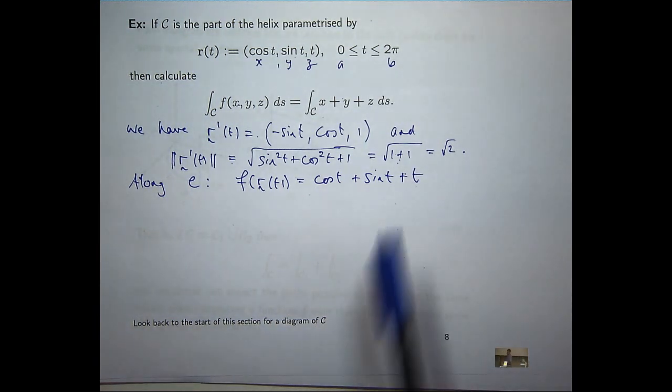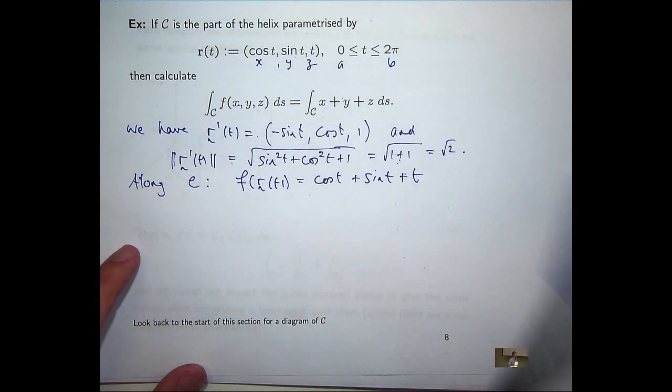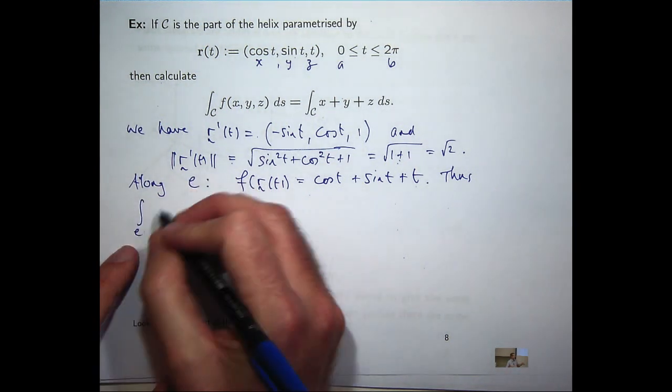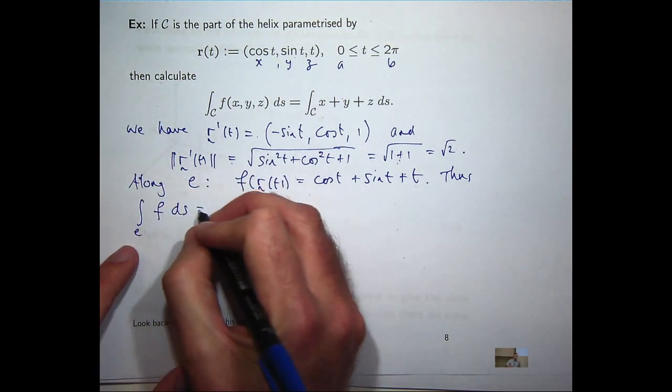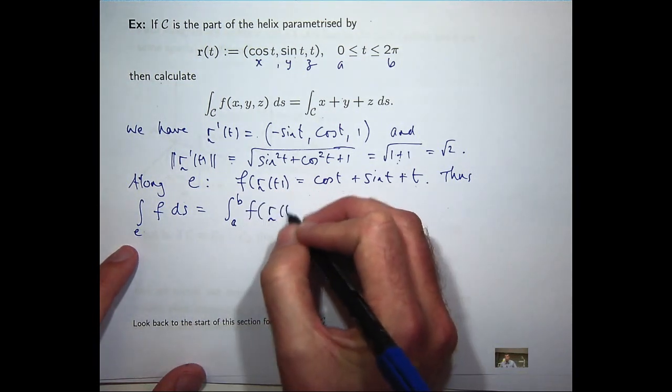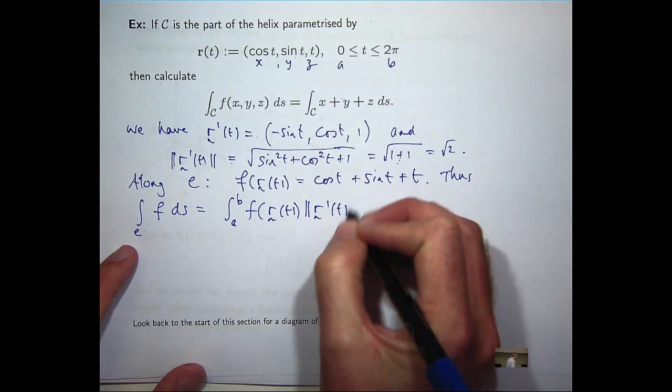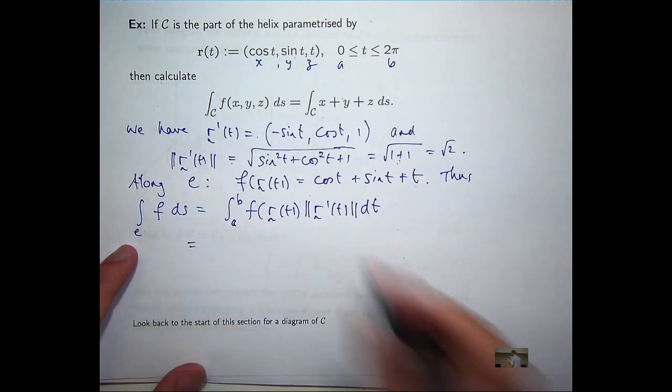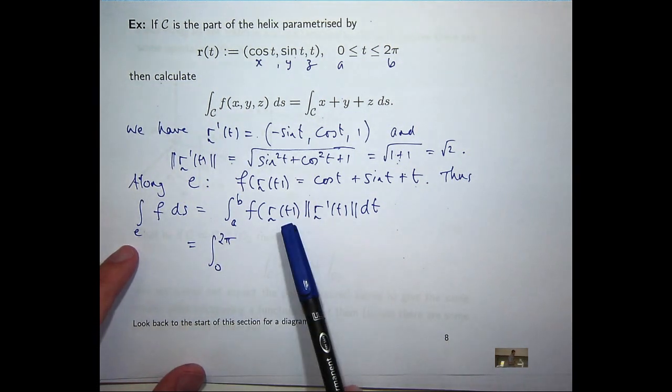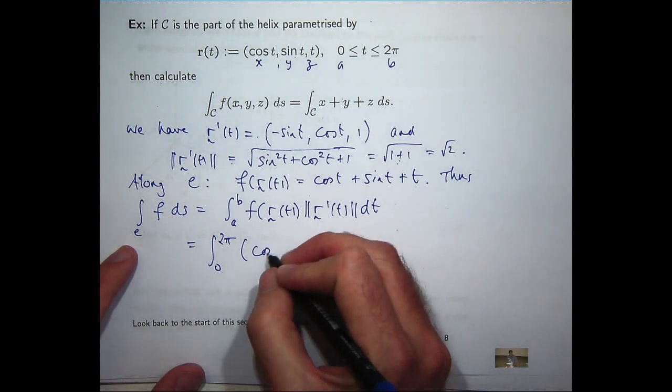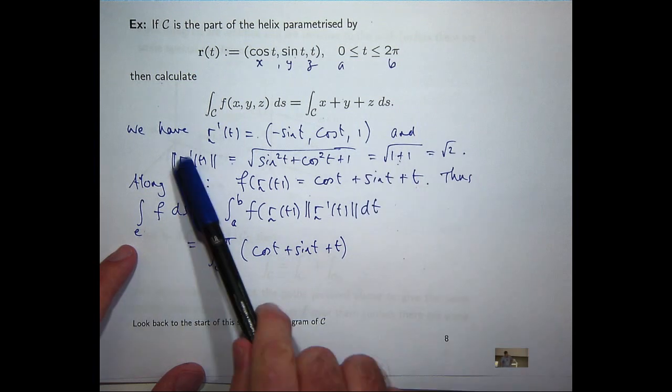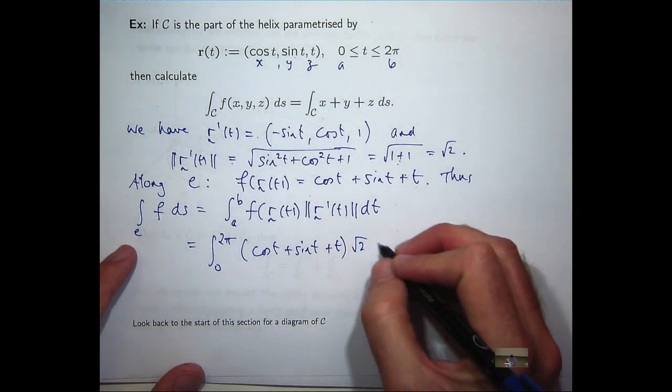Now what we want to do is take these two, multiply them together, and integrate with respect to t. So, our limits of integration are zero and 2π. Our f of r is here.